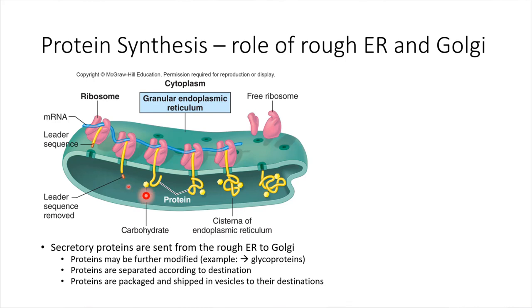The rough ER is where carbohydrates can be added to proteins to form glycoproteins. And then once those carbohydrates are added, the rough endoplasmic reticulum can send a group of these proteins off to the Golgi, and the Golgi can ship them off to the plasma membrane. So a lot of coordination takes place in cells in order to get the molecules produced and then to get them where they need to go in the end.